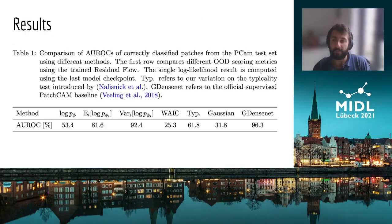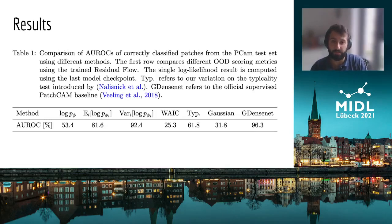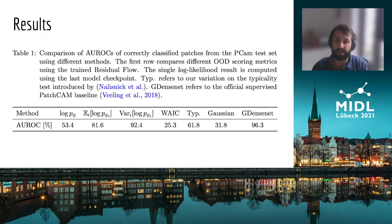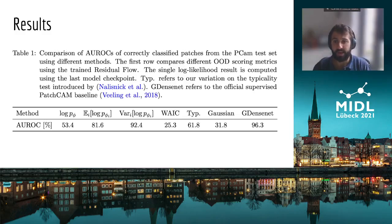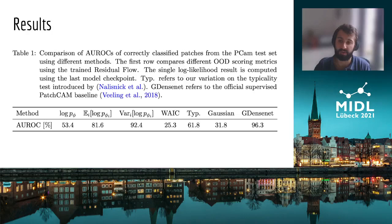We compare the performance of those different methods in terms of area under the curve to assess the separation of the healthy inlier and unhealthy outlier samples. We find that the regular likelihood measure achieves random performance and does not separate healthy and unhealthy patches from one another. On the other hand, expectations of the likelihood achieve non-trivial results. Particularly, the variance of the likelihood achieves an AUC that is close to that of a fully supervised method as published by the authors of the PatchCamelyon dataset.